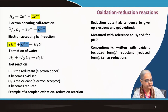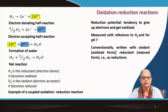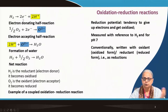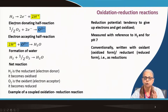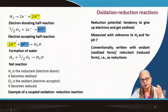Let's revise a little bit about oxidation-reduction reactions. Here we have hydrogen — the half reaction for hydrogen is two protons and two electrons. This is called the electron-donating half reaction, and then we have oxygen. When oxygen picks up these electrons, this becomes the electron-accepting half reaction.